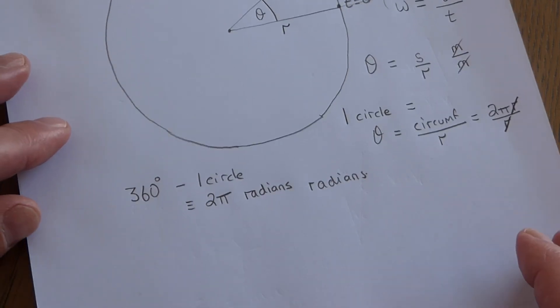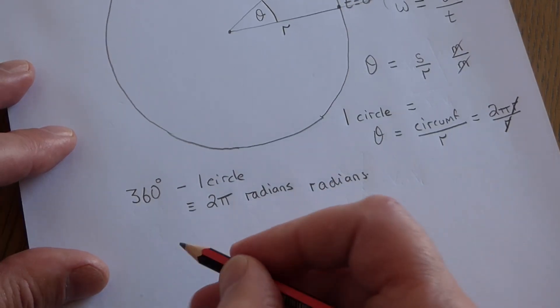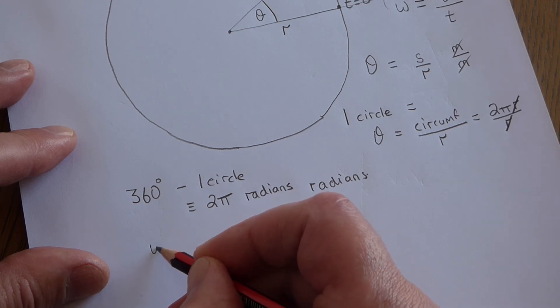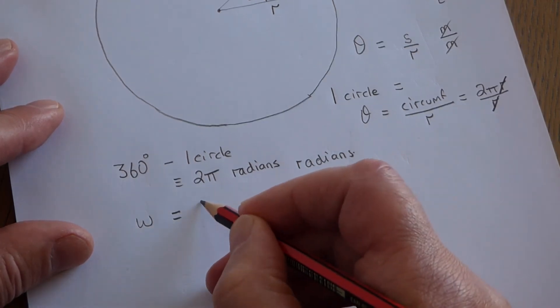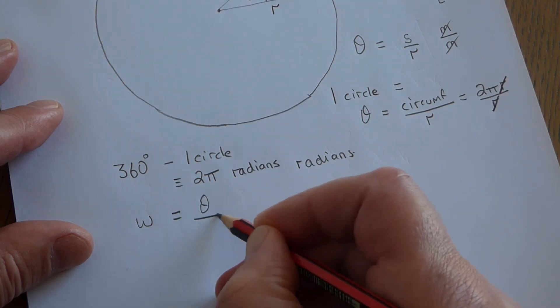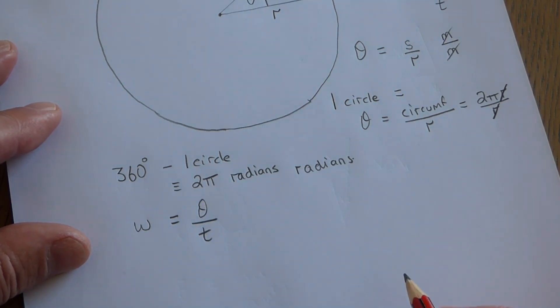It means then this. Angular velocity is the angle swept out, theta, per unit time. So you divide by t.